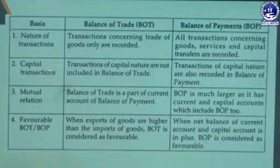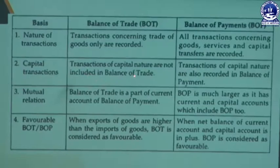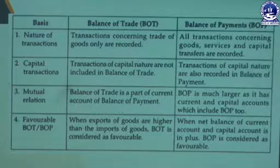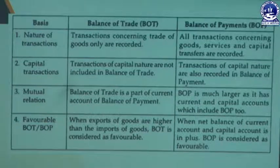Another basis of difference is capital transactions. Transactions of capital nature are not included in Balance of Trade, but in Balance of Payment, transactions of capital nature are also recorded. Capital transactions are long-term in nature — transactions whose maturity period is more than one year come under capital nature. Balance of Trade does not record capital nature transactions, whereas Balance of Payment records all transactions of capital nature.